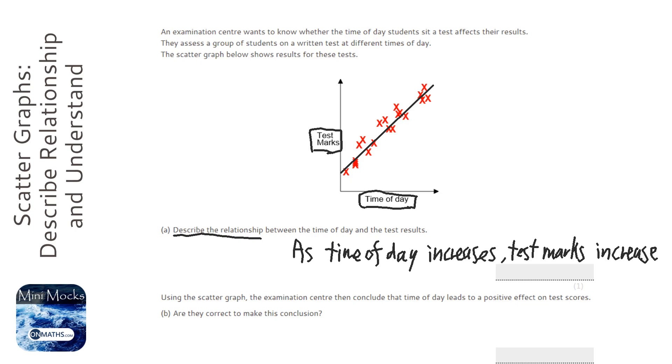So using the scatter graph, the examination center then concludes that the time of day leads to a positive effect on test scores. Are they correct to make this conclusion?